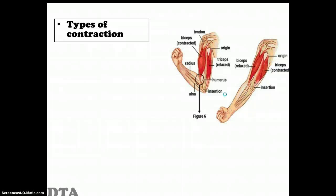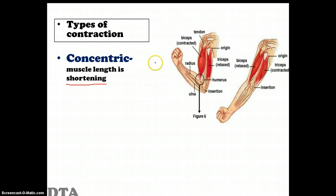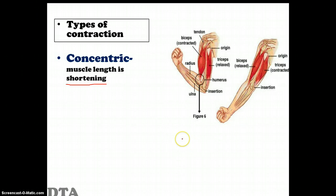There are different types of contractions. First we look at concentric contraction — this is where the muscle length is shortening, and that's the key term to note down. In a bicep curl, the hand moves closer towards the shoulder, so the bicep brachii shortens. Now if we had a weight in our hand and were lowering it, the bicep brachii would be lengthening, so it's no longer a concentric contraction.